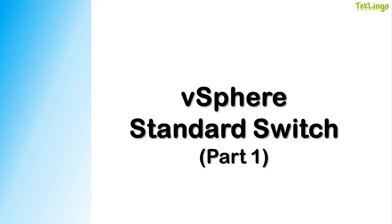In this video we are going to talk about what a virtual network and virtual standard switch are. In part 1 we are going to talk about different types of virtual switch connections, port groups such as virtual machine port groups and VM kernel port groups, and why we use them. We are also going to talk about how you can design your virtual standard switches, and the two types of virtual switch that exist in vSphere environments: standard switch and distributed switch.